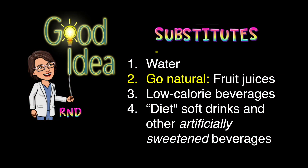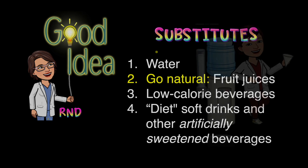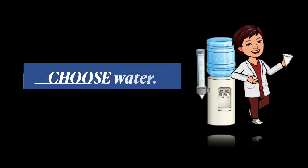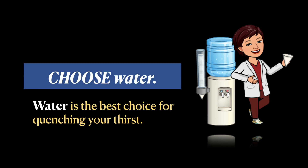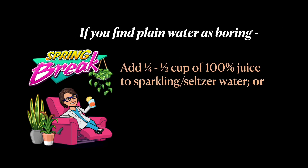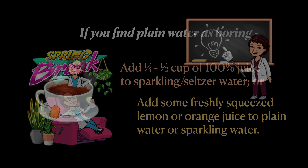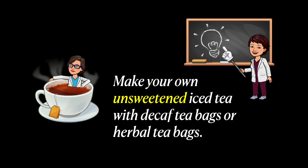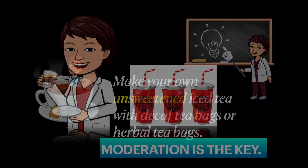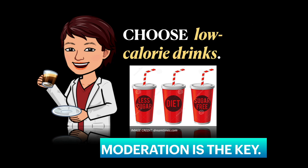As a substitute for sugary drinks, drink water. Go natural by drinking fruit juice. Try low-calorie beverages or diet soft drinks and other artificially sweetened beverages. Water is the best choice for quenching your thirst. If you find plain water boring, you can add a quarter to half cup of 100% juice to sparkling or seltzer water, or add freshly squeezed lemon or orange juice to plain or sparkling water. Make your own unsweetened iced tea with decaf or herbal tea bags. Choose low-calorie drinks, but moderation is important.